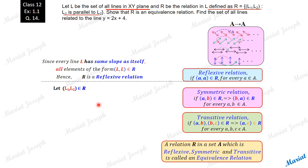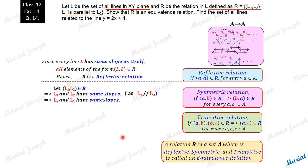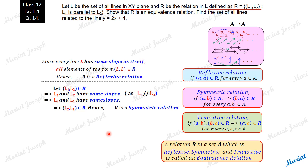Now let's take an arbitrary example. Suppose (L1, L2) belongs to R, meaning L1 and L2 have the same slopes since L1 and L2 are parallel. Then L2 and L1 will also have the same slopes, which means (L2, L1) will belong to R. Obviously, when L1 is parallel to L2, we can say L2 is parallel to L1. This arbitrary element (L1, L2) satisfies the definition of symmetric relation: whenever pair (A, B) belongs to the relation, (B, A) should also be in the relation. So this relation is symmetric.